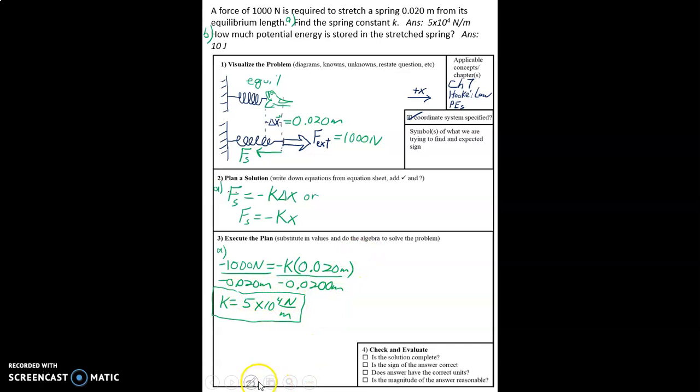Now for part B, that's where we're asked to find the spring potential energy. So spring potential energy, and this equation is also on your equation sheet and in your textbook. It's equal to 1 half K times delta X squared.